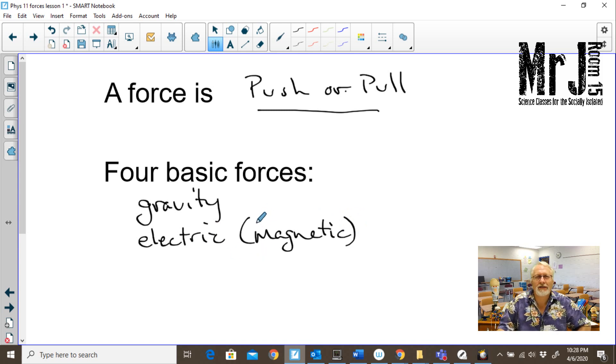The interesting thing is that we think of there being perhaps lots of forces out in the world. There's really only four basic forces. First of all is gravity, which is the force that happens between masses, between objects that have mass. We have the electric force. And sometimes we put magnetic into here because magnetism is really just an expression of the electric force. We then have the strong nuclear force and the weak nuclear force.